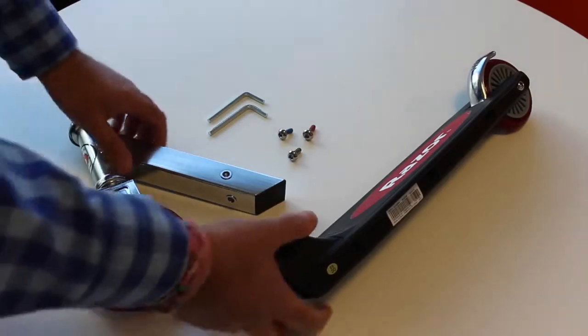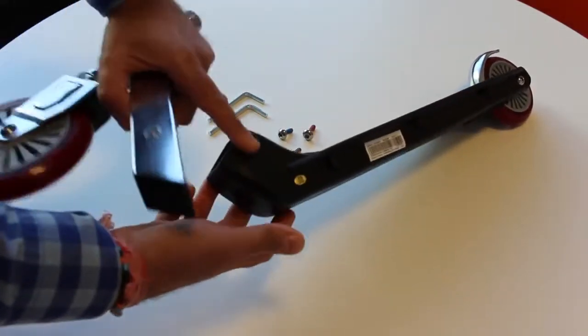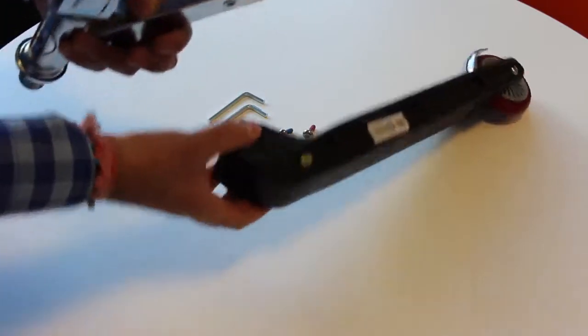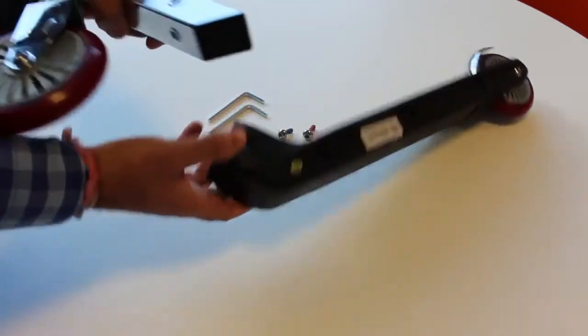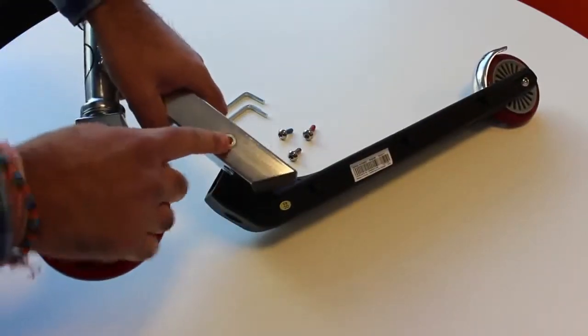Now you want to put the front forks onto the deck. There's three holes on the actual steel part of the forks which should match up to the plastic part of the deck.